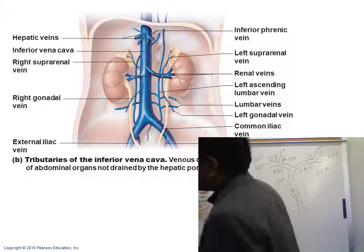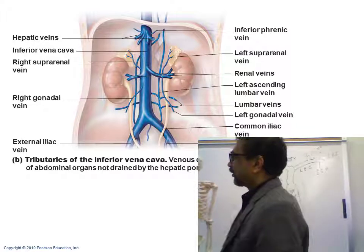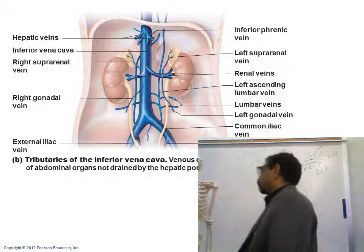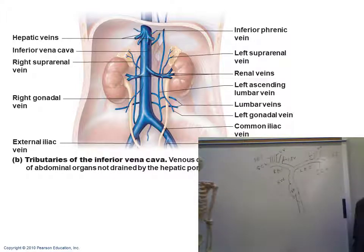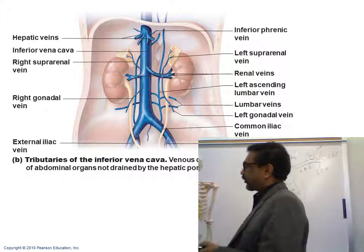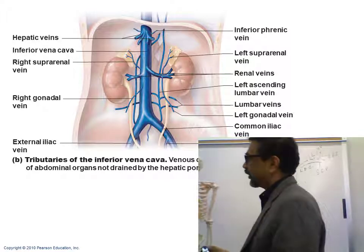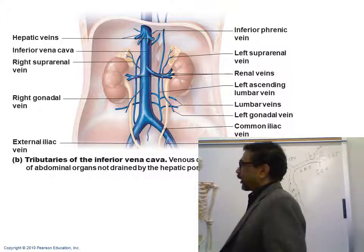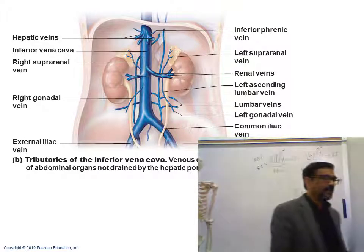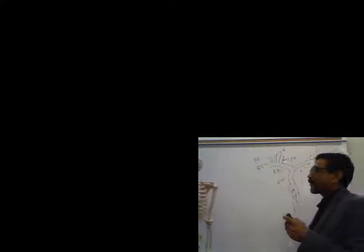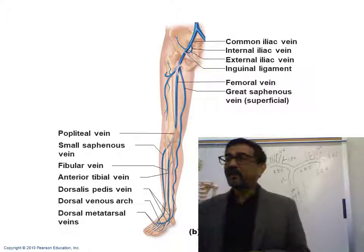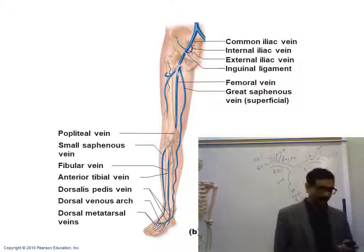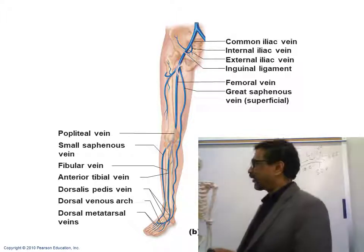You also have right and left gonadal veins getting blood from the gonads. The lower end of the inferior vena cava divides into right and left common iliac veins, then common iliac divides into external (larger) and internal (smaller). External goes to the lower limb, to the thigh, and becomes the femoral vein. From the upper part of femoral, the great saphenous vein — the longest vein of the body — arises and goes all the way to the foot.